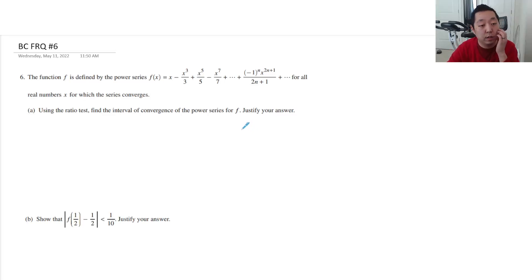Okay, we're looking at the last FRQ here on the BC exam. As usual, if there's any corrections, I'll put it in the description or pin it as a comment. So, function f is defined by this power series for all numbers. Using the ratio test, find the interval of convergence for the power series of f. Justify your answer.